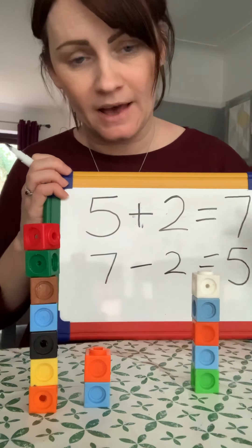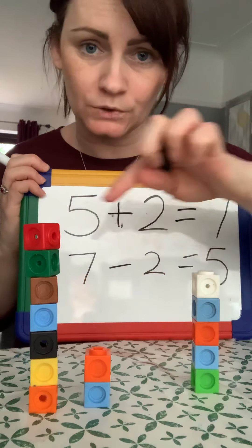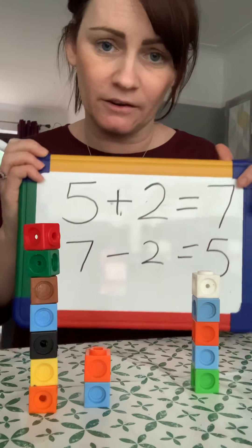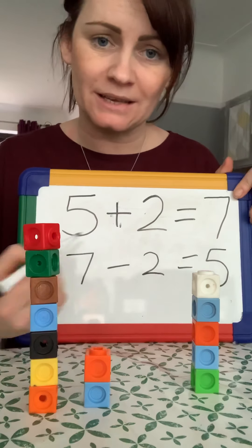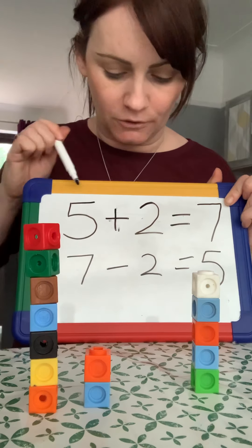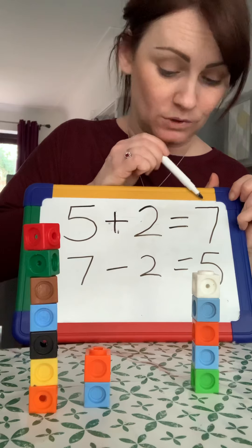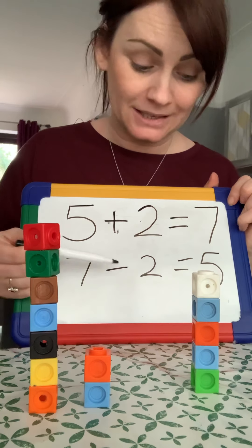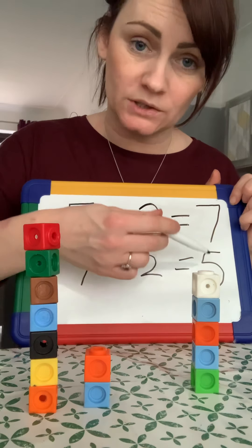So, we haven't changed the amount of these numbers or the value of them. We've just read the inverse. We've changed it from our addition to subtraction. So, 5 plus 2 equals 7. 7 take away 2 equals 5.